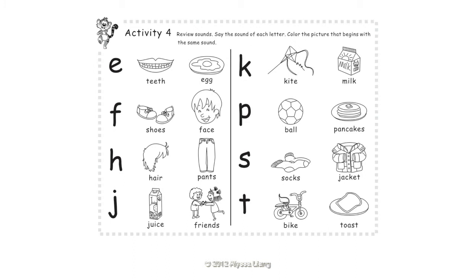Activity 4: Review Sounds. Say the sound of each letter. Color the picture that begins with the same sound. E — Egg. F — Face. H — Hair. J — Juice. K — Kite. P — Pancakes. S — Socks. T — Toast.